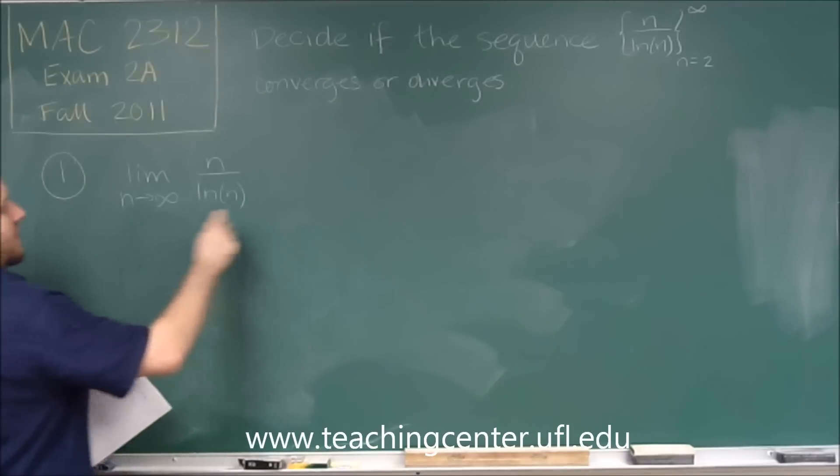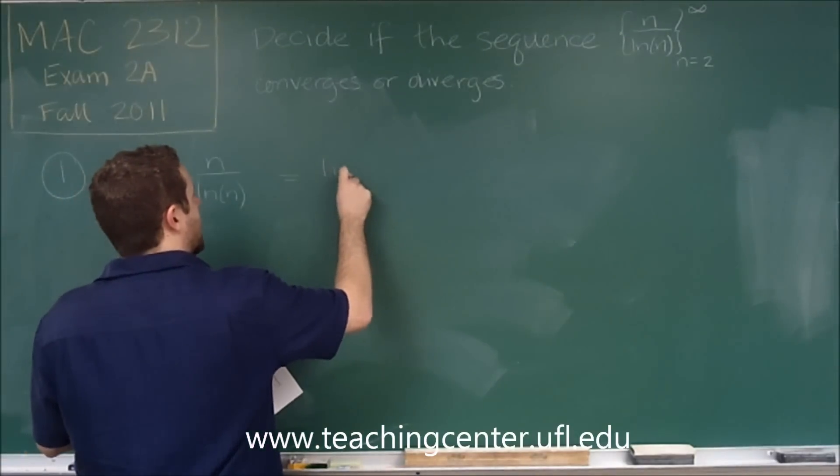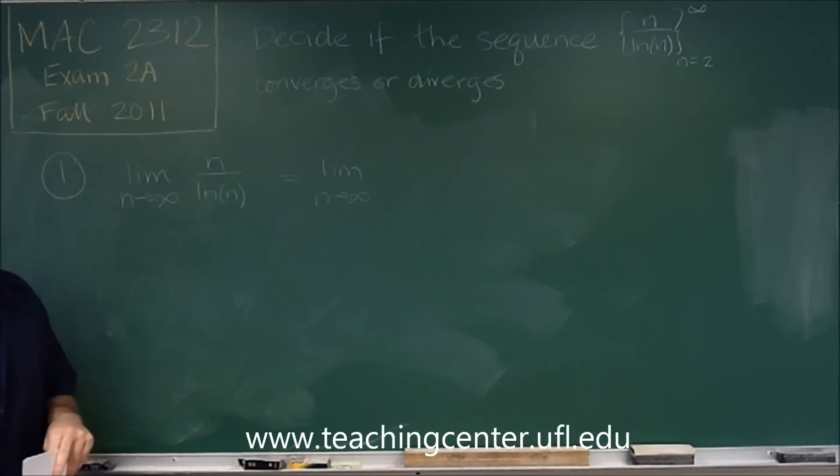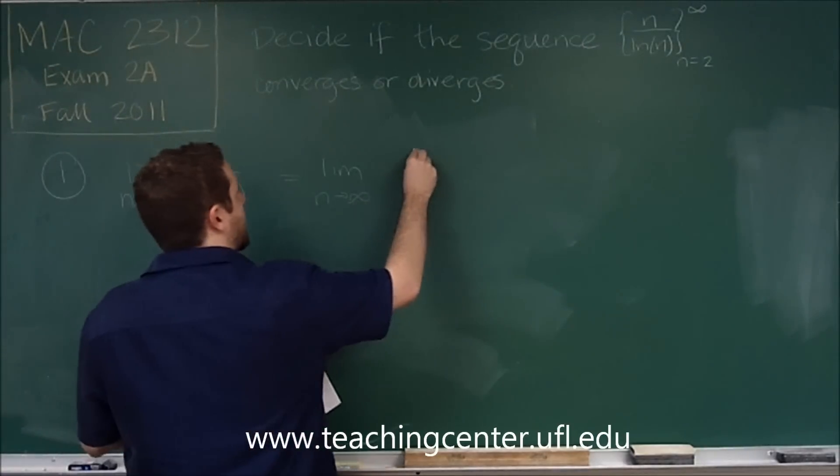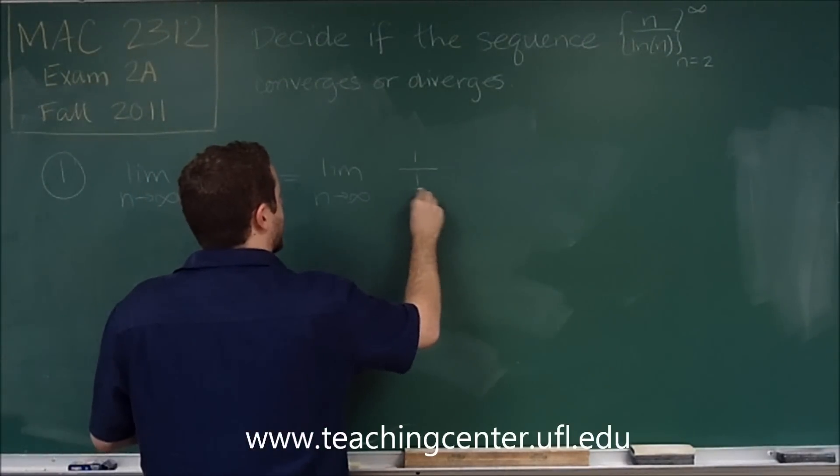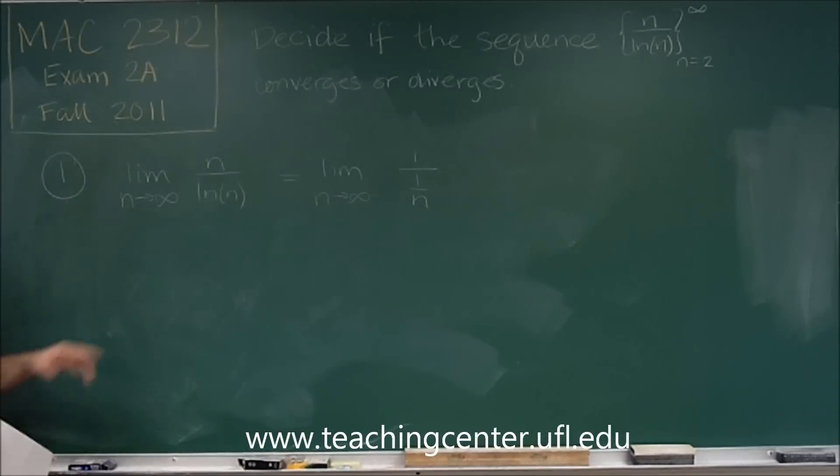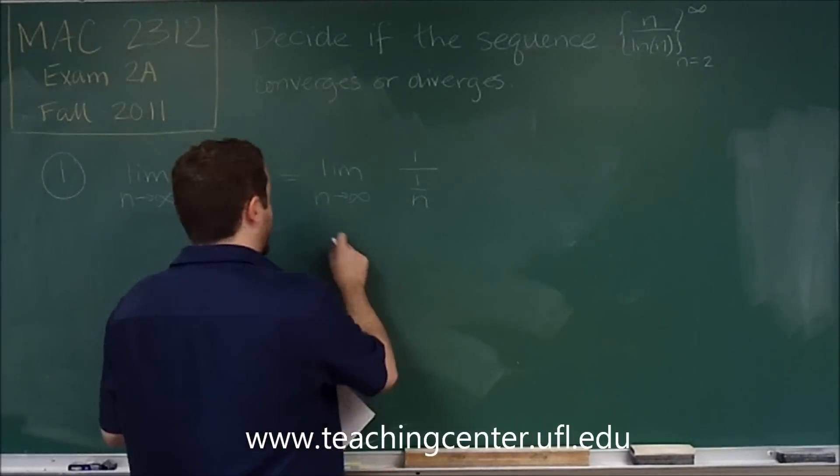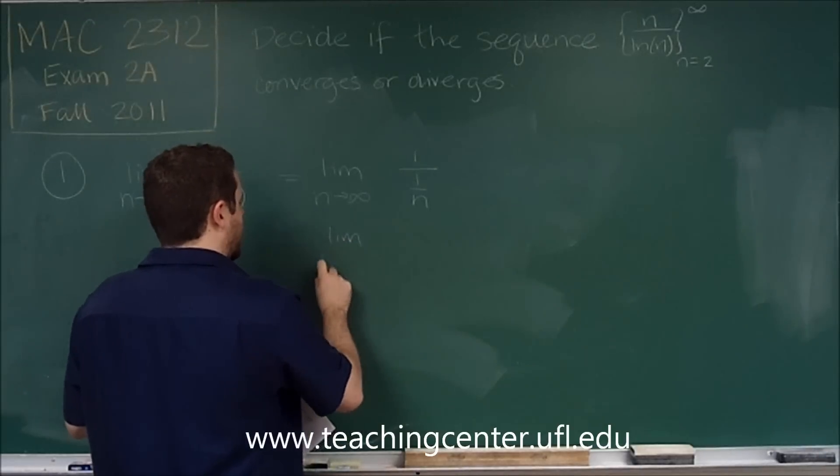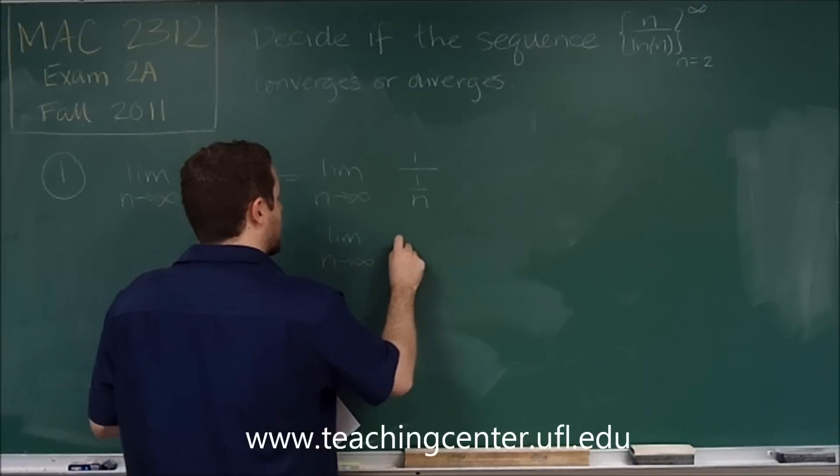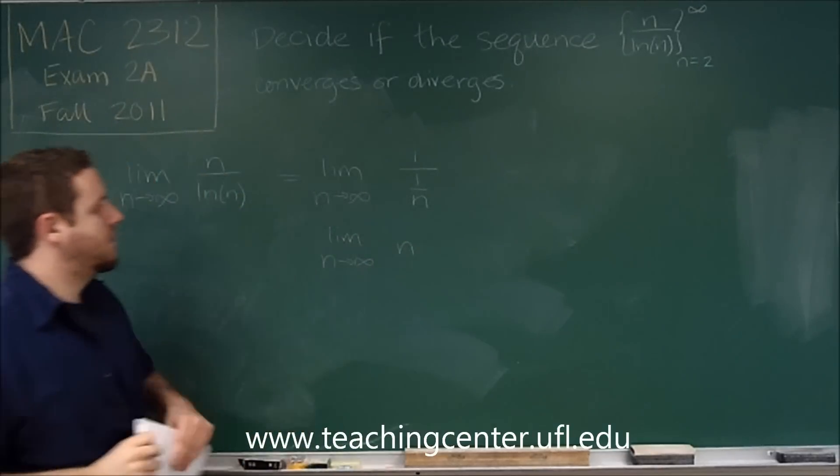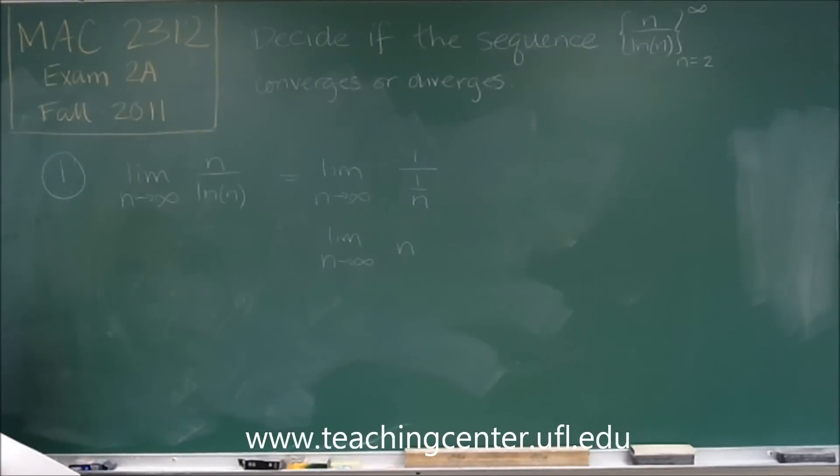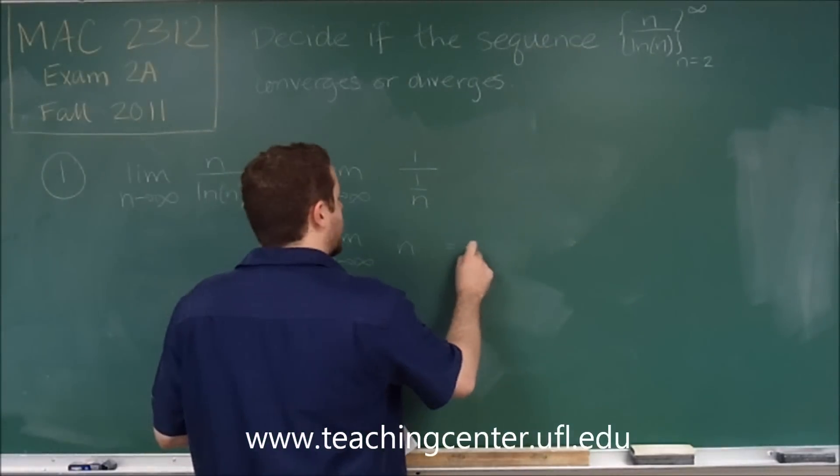So L'Hôpital's rule, remember, says that this limit is equivalent to the limit of the derivatives of the top and bottom. So for our derivatives, the derivative of n is just 1, but the derivative of ln of n is 1 over n, and this simplifies to n, because we're doing 1 over the reciprocal of n. So the reciprocal twice is just n, and you can see here that this limit is infinity.